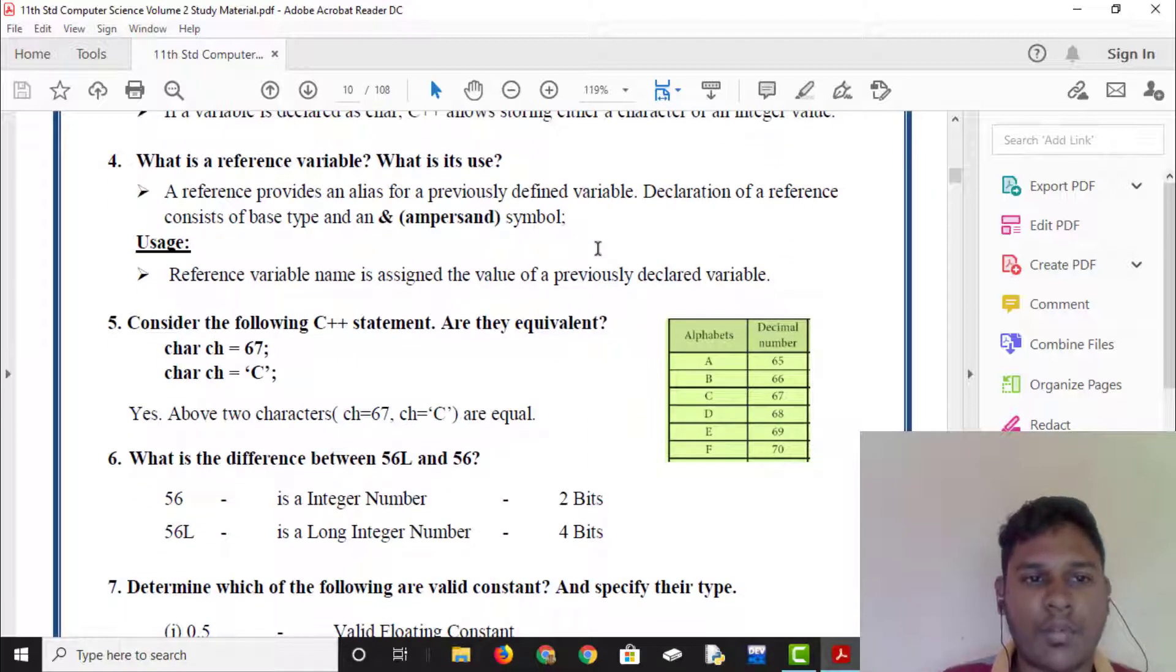What is the reference variable? What is its use? A reference provides an alias for a previously defined variable. The declaration of reference consists of base type and an ampersand symbol. This is called ampersand symbol. The reference variable name is assigned the value of the previously declared variable.